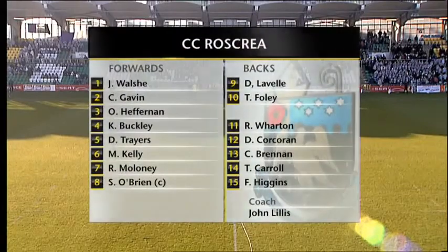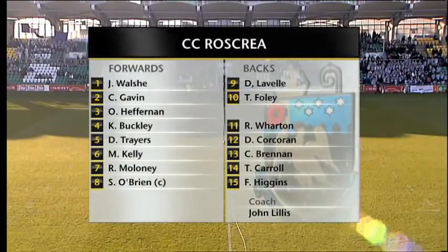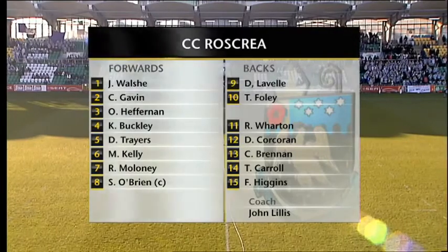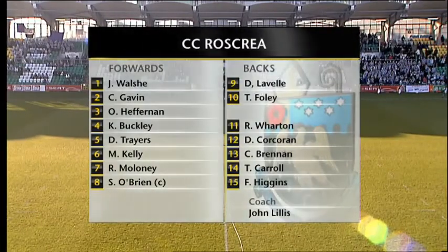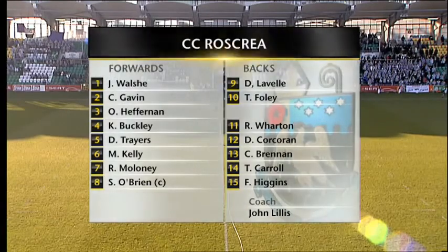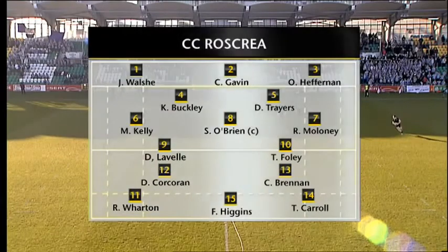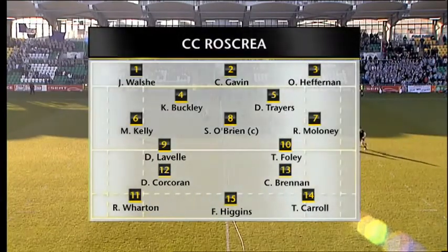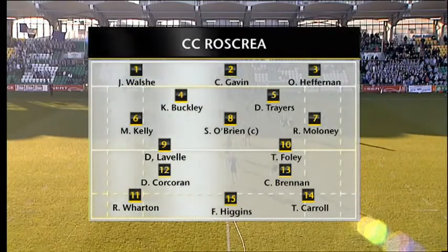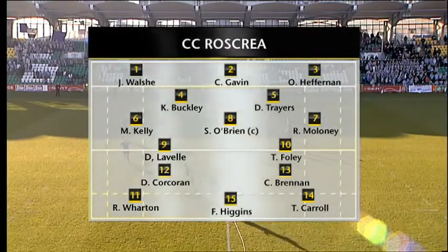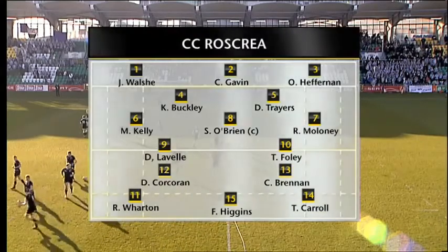Let's take a look at the team. Cistercian College first — the Ross Gray side make just one change from the 15 that started against Wesley. Killian Buckley was a second-half substitute in the second row and he retains his place alongside Daniel Trares. Ross Gray captain is their number eight Sean O'Brien, who scored two tries in the first round. In the back line there's plenty of pace — Dwayne Corcoran and winger Tim Carroll crossed the line against Wesley. Tom Foley kicked five from six from the kicking tee.